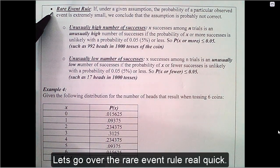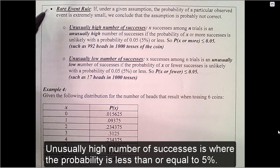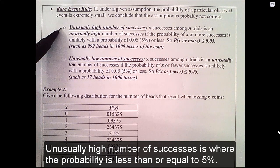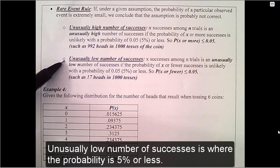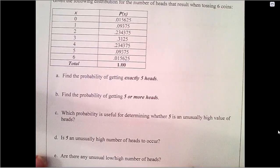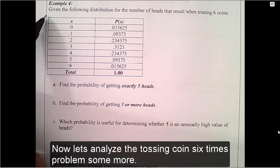Let's go over the rare event rule real quick. Unusually high number of successes is where the probability is less than or equal to 5%. Unusually low number of successes is where the probability is 5% or less. Now let's analyze the tossing coin six times problem some more.